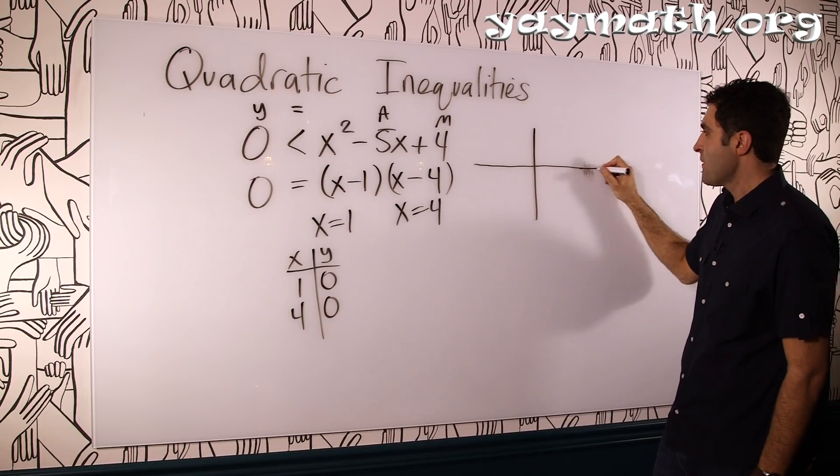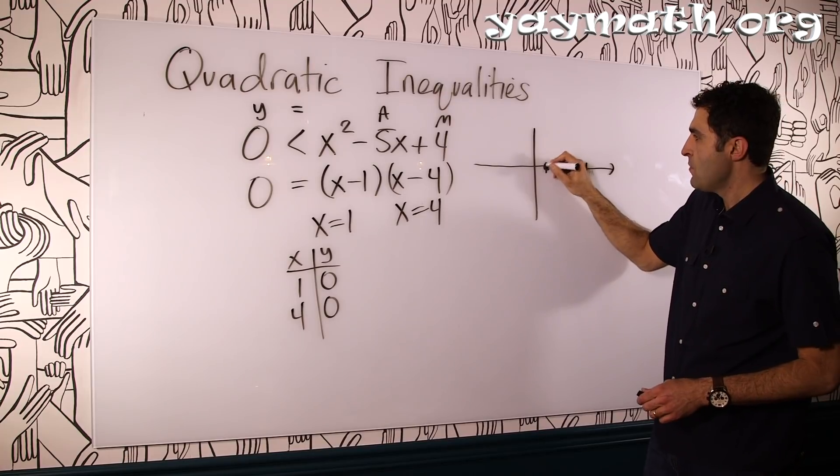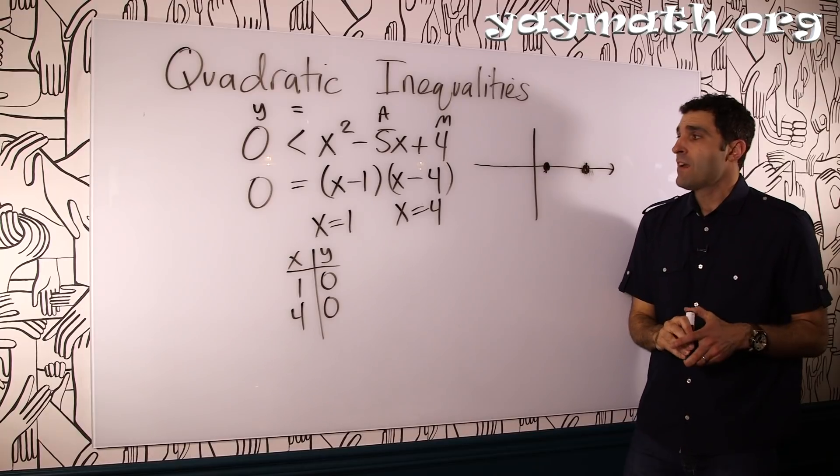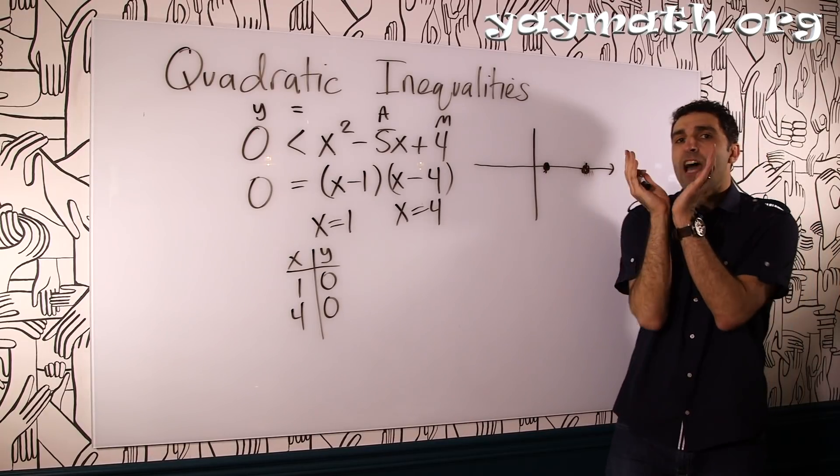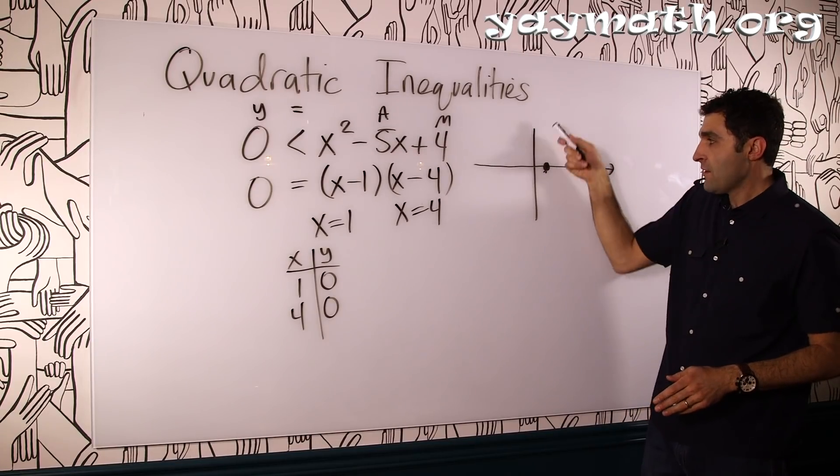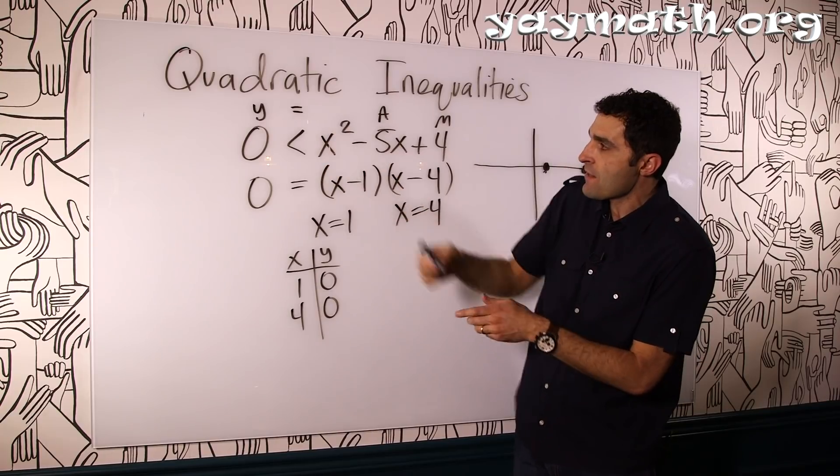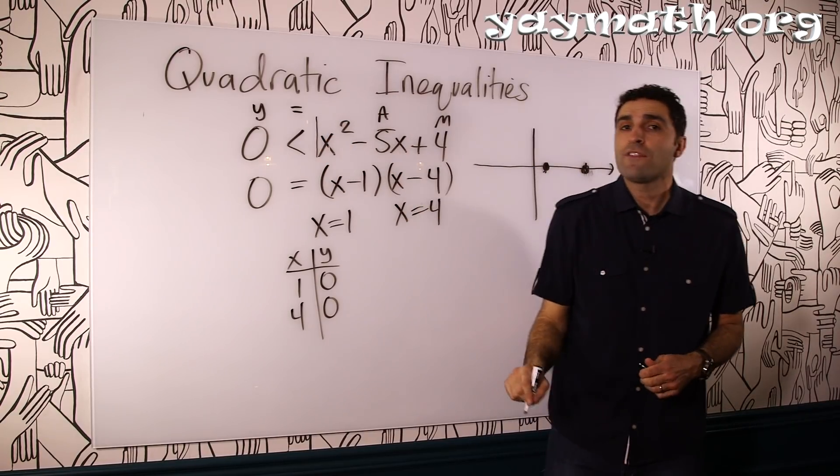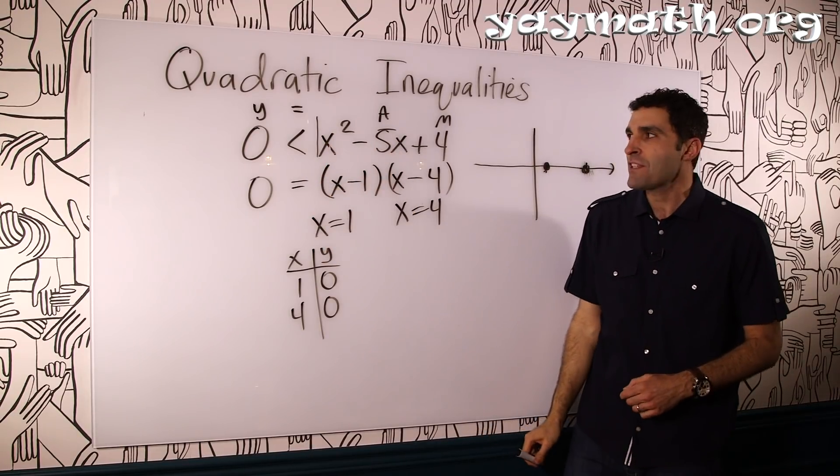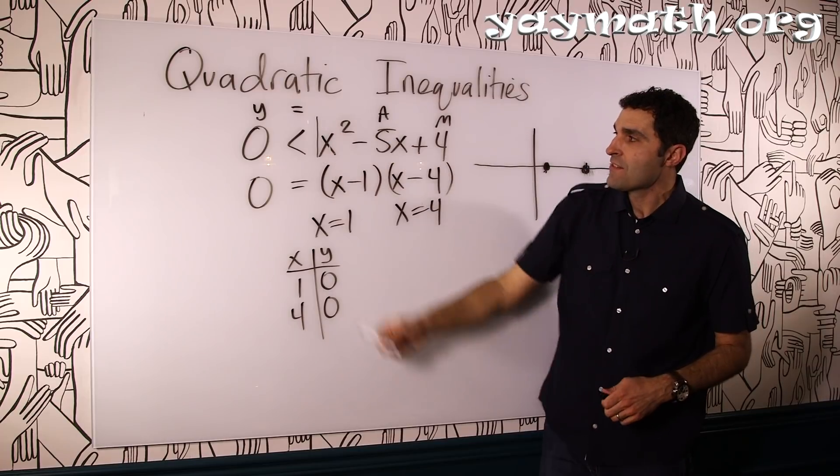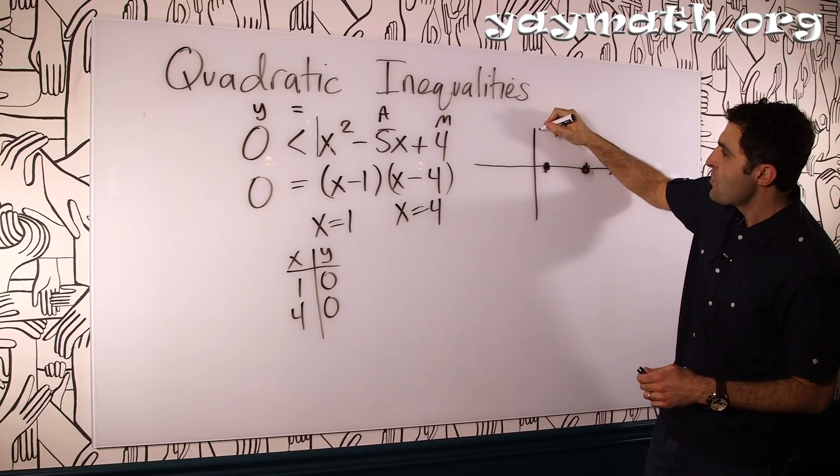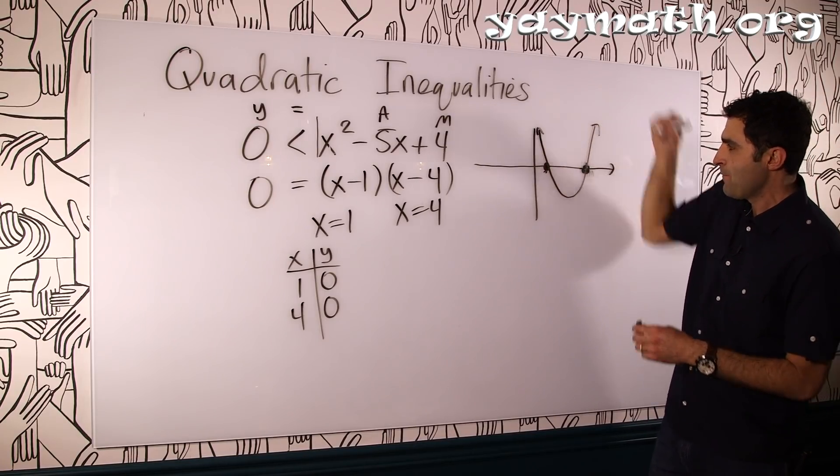So let's get a feel for what this graph looks like, parabolically speaking. Let's give us a little more space here. So we got 1 and we got 4. Boom and boom. So our parabola goes through these two points definitely. Keeping in mind that this is an uppy parabola. It's a smiley, it creates a valley. The reason we know that it creates a valley is that this x squared is positive. You'll see that it's a positive leading coefficient.